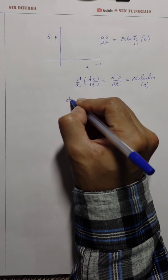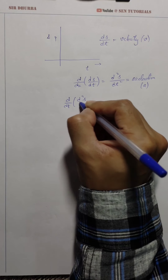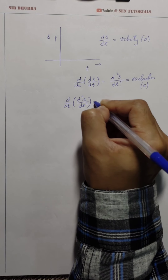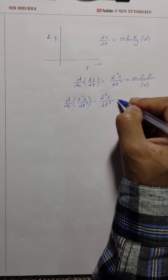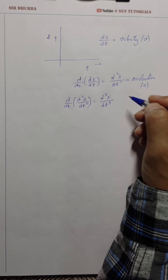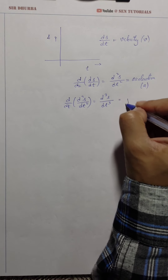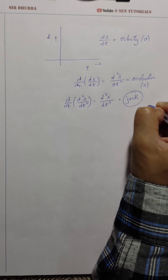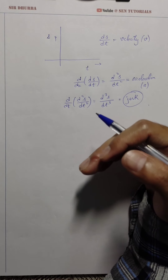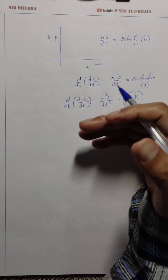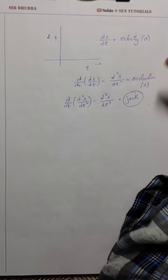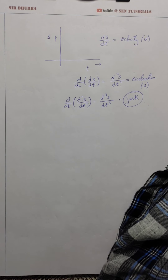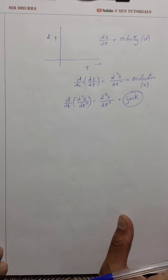If you wish to go for the third-order derivative, that is d³s/dt³ where s denotes displacement, then this is known — if you've learned in physics — as jerk. That's like a sudden jerk: suppose you're traveling in a bus at high speed and all of a sudden the bus stops — you tend to move forward. That is called jerk. We can proceed again wherever the derivative exists.